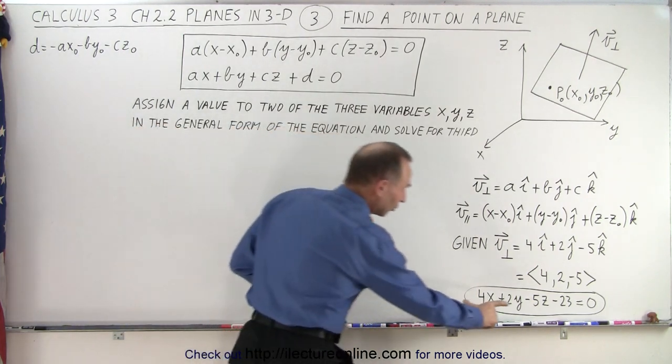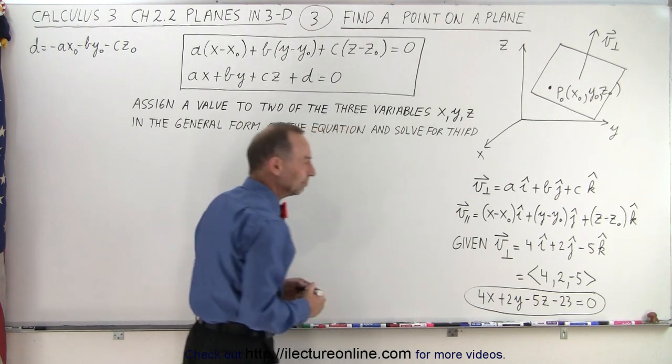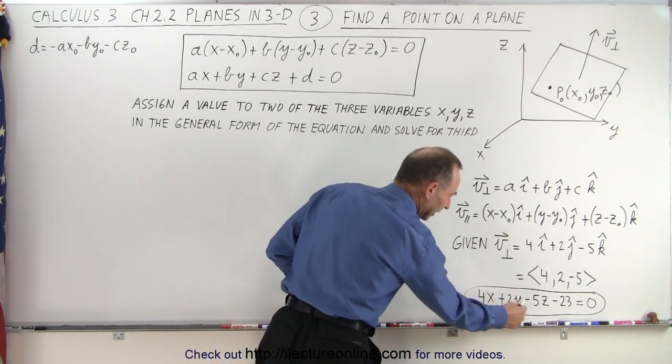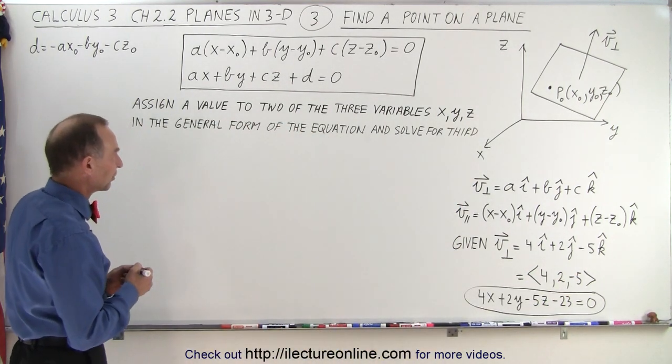So we're given the general equation right here of the plane. We have the perpendicular vector to the plane, which of course you don't need once you have the general equation, because 4, 2, and negative 5 are of course the magnitudes of the components of the perpendicular vector.